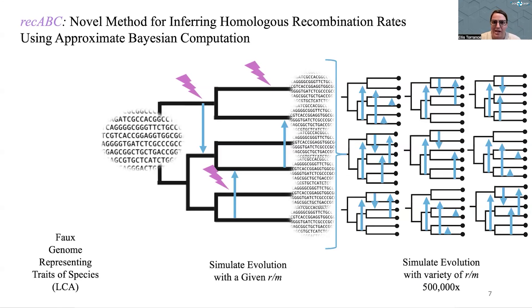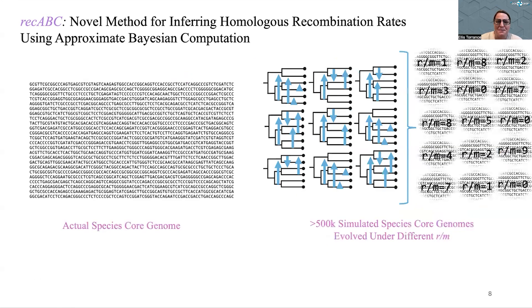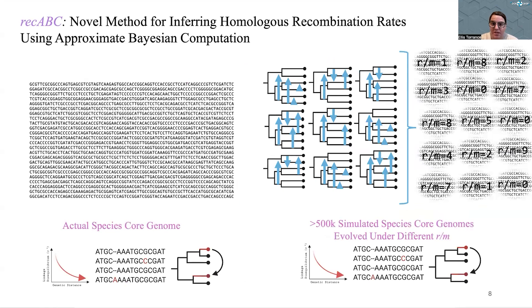It was like four years of simulating, it was a lot. But what we can do with this is really cool. We can start comparing each of these sets of 500,000 simulations per species to generate this posterior dataset using a number of summary statistics of simulations that have populations that look really similar to our real species population. We can infer then that that simulated population evolved under a very similar recombination rate as our real species population.